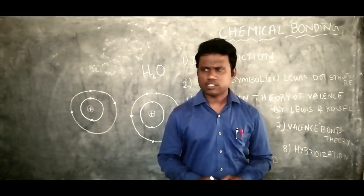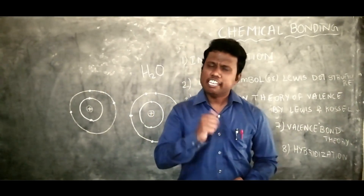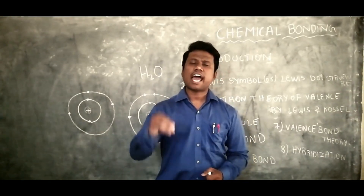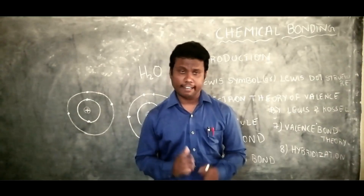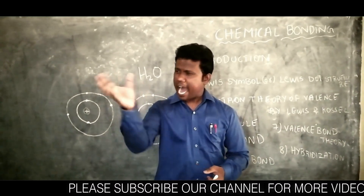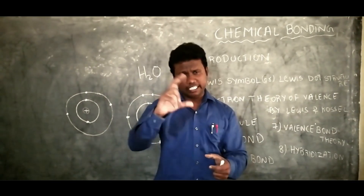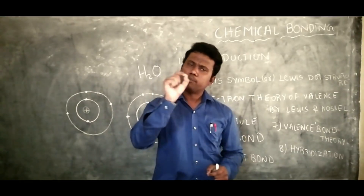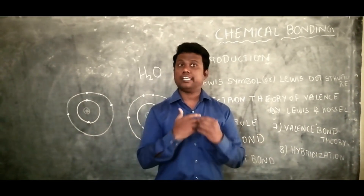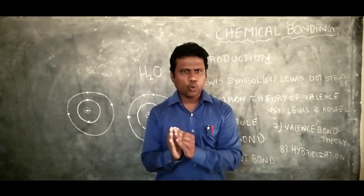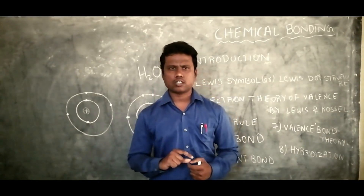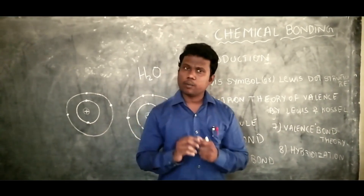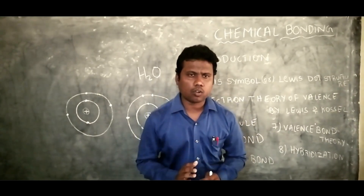Let me take a common example from daily life — sodium chloride, which we use as common salt. It is in solid state. If I take sodium chloride and place it in a container and shake it, can I separate sodium and chlorine from sodium chloride? No, it is never possible. That means sodium and chlorine cannot be separated by a physical process — they are combined by a chemical process.